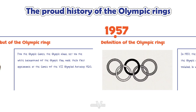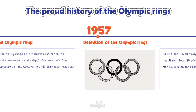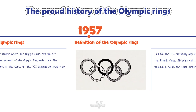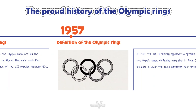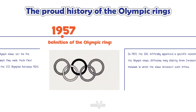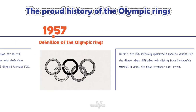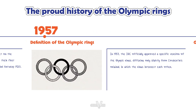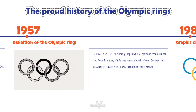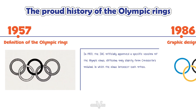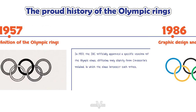1957: Definition of the Olympic rings. In 1957, the IOC officially approved a specific version of the Olympic rings, differing only slightly from Coubertin's original, in which the rings intersect each other.